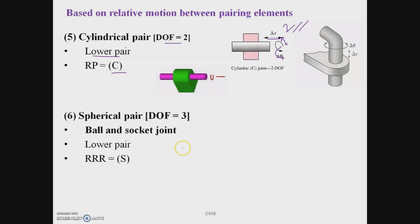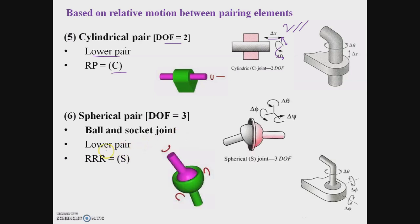A spherical pair (letter S) is formed by a ball and socket joint. It is classified under lower pairs and has 3 degrees of freedom — rotation about X, Y, and Z axes. The mirror attachment of a vehicle is also an example of a spherical pair.